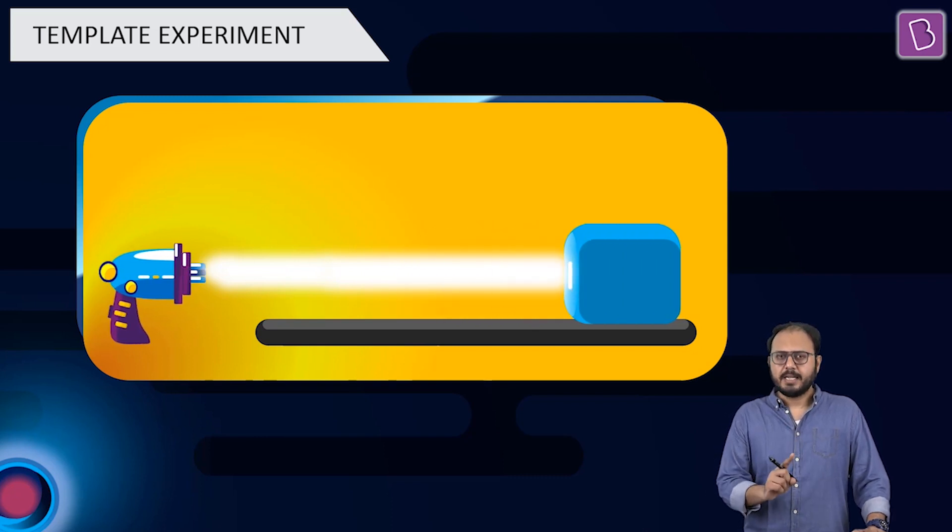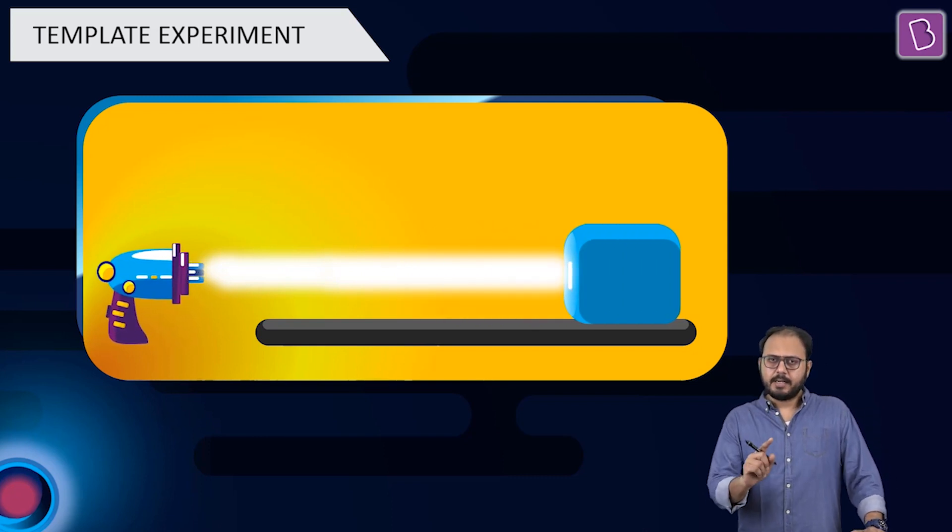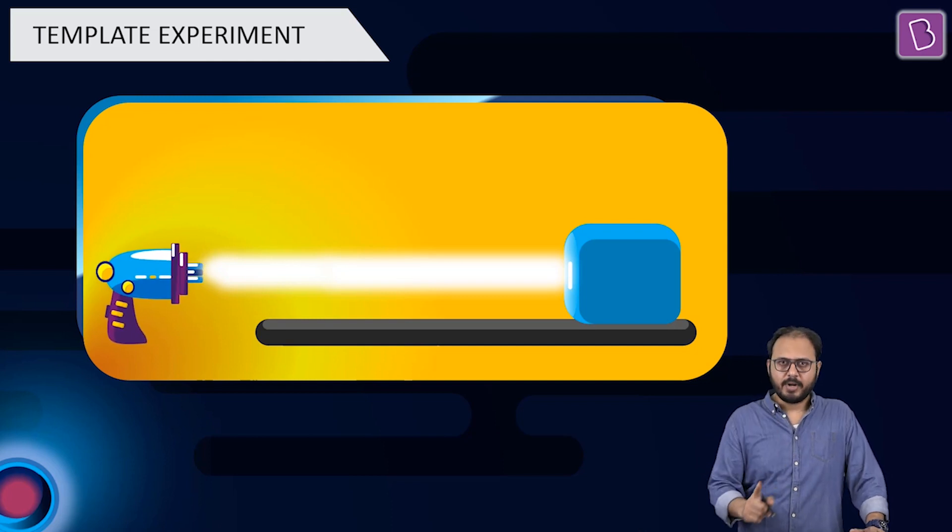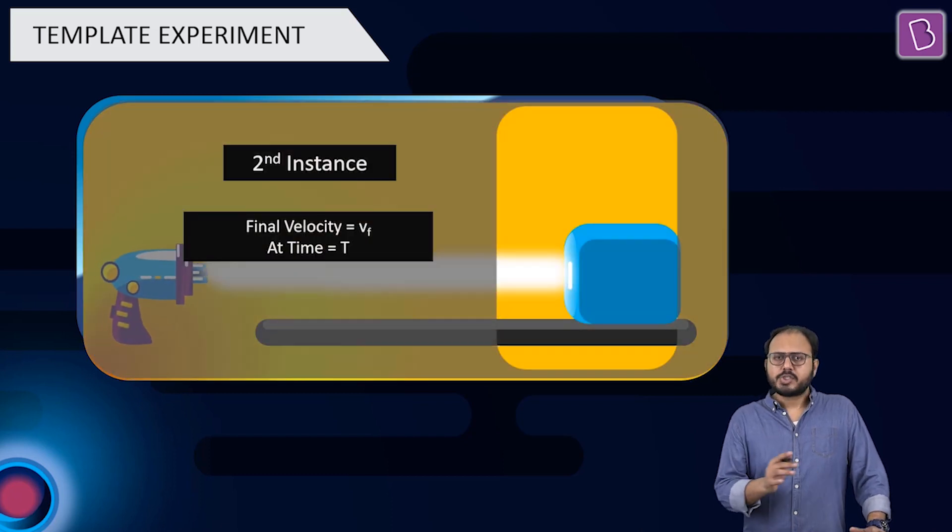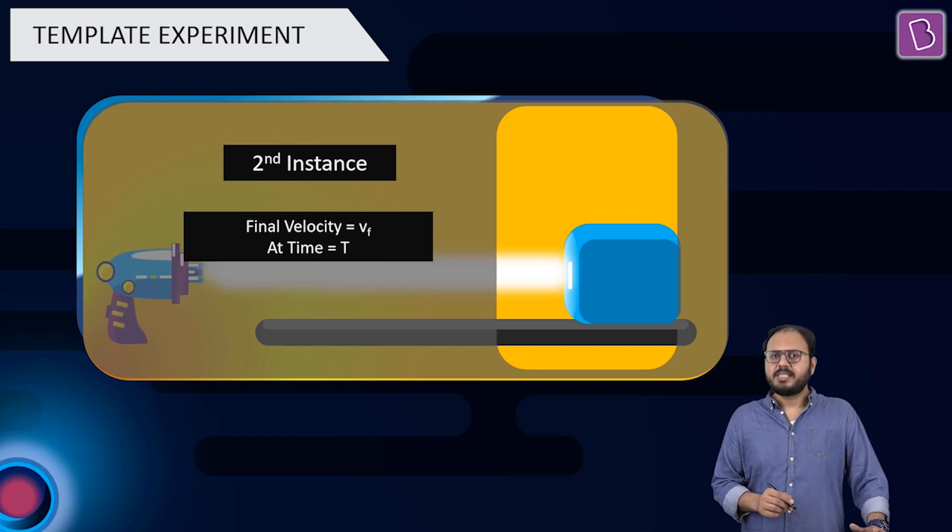One force gun gives one force. Alright. When the motion begins, that is at t equal to zero, the velocity would be v_i, initial velocity. When the block stops, the final instance, the time is capital T and the velocity at that instant is v final or v_f.